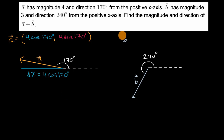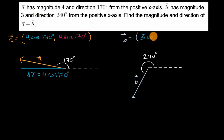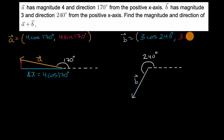Vector B, by the same logic: its x component is going to be the length of the vector — three — times the cosine of 240 degrees. And then the y component is going to be three times the sine of 240 degrees.